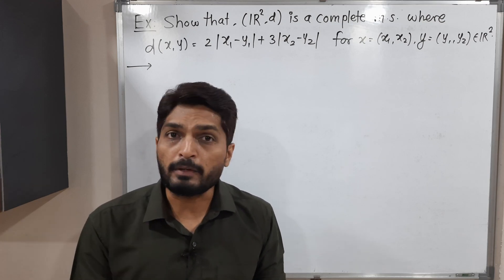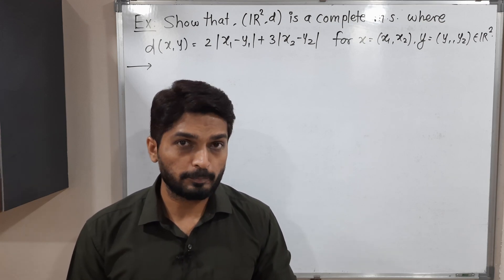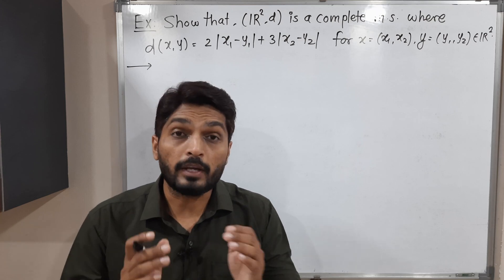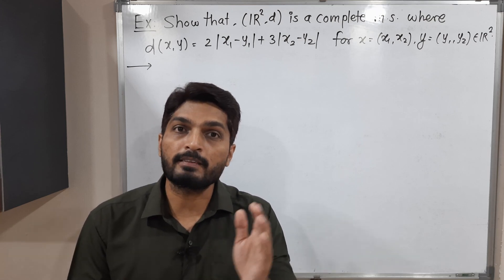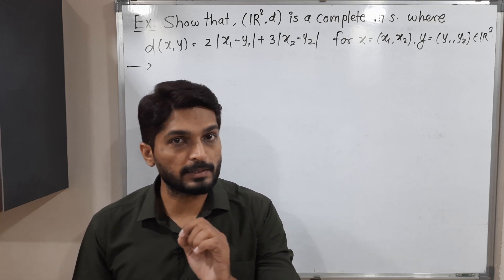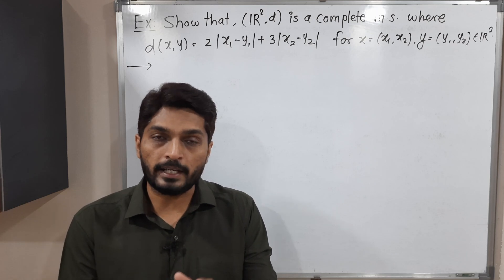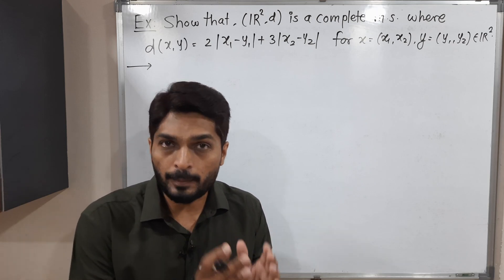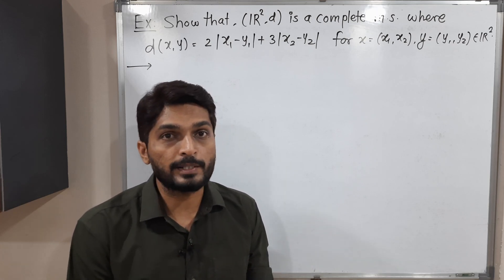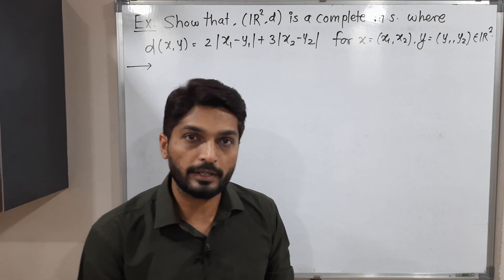First of all, when do we say the metric space is complete? If every Cauchy sequence is convergent, then we say the metric space is complete. So here also I will take any arbitrary Cauchy sequence and prove that it is convergent.